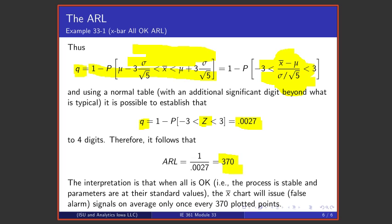Now, the interpretation of this is that when everything is all okay, the process is stable, parameters are at their standard values, and I'm control charting X bars, then an X bar chart will signal, will issue an alarm—in this case a false alarm—on average only once every three hundred and seventy plotted points. So that gives me some comfort that making use of a Shewhart control chart for averages is not going to have me chasing ghosts. It's going to be reasonably rare that it issues a false alarm.